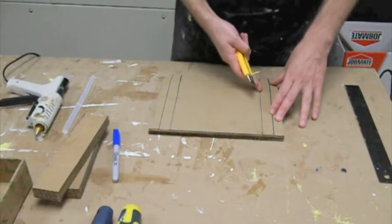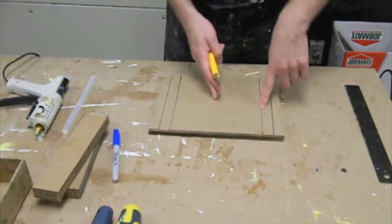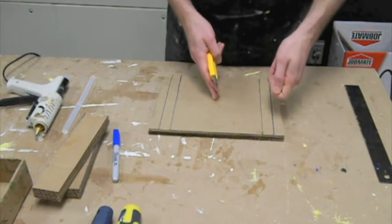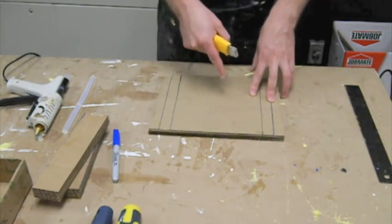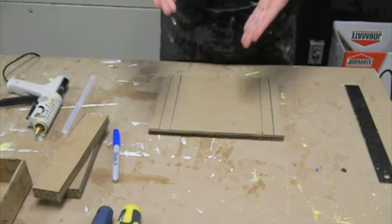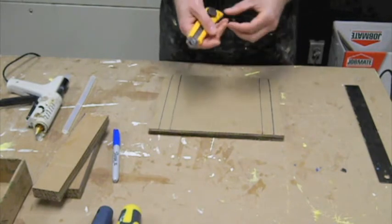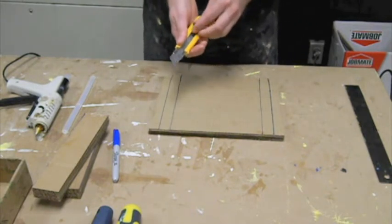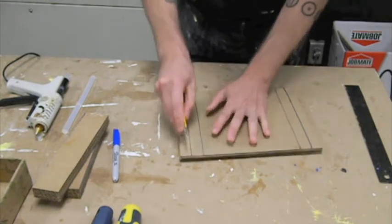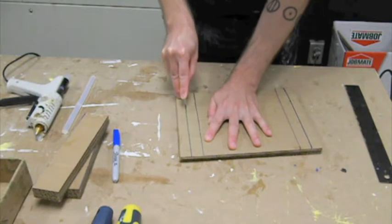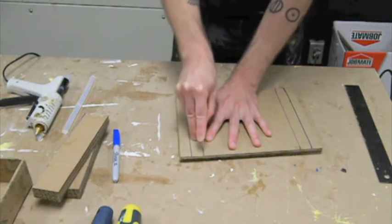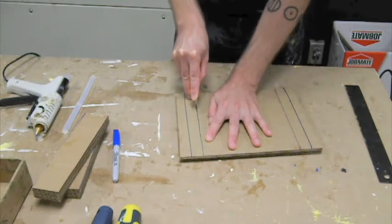So in another video, we showed you how to score and then scrape out a channel in one piece of cardboard to insert another piece of cardboard to make a really strong join. So that's what we're going to do today with these legs. We're going to carve out these channels so that we can then fit these legs in.